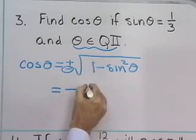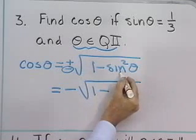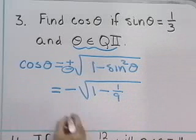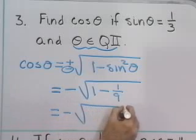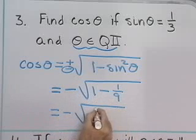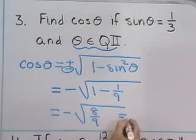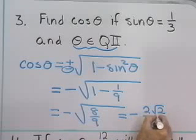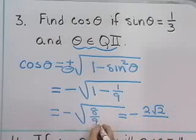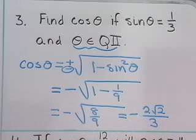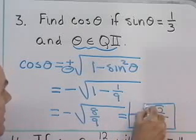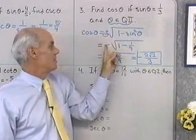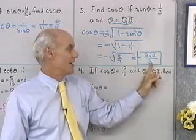So that's going to be the negative square root of 1 minus sine squared. Sine is 1 third, so its square is 1 ninth. That gives negative square root of 9 ninths minus 1 ninth, which is 8 ninths. The square root of 8 is 2 square root 2, and the square root of 9 is 3. So if the sine of theta is positive 1 third and theta terminates in quadrant 2, then the cosine of theta must be negative 2 square root 2 divided by 3.